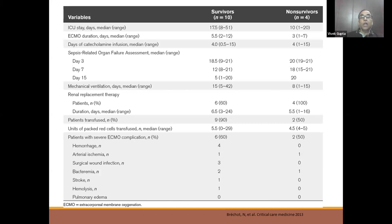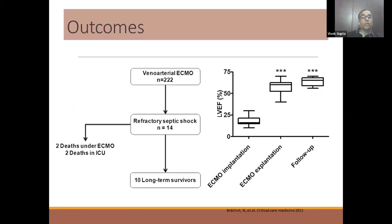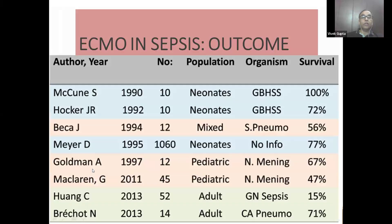Even looking at the renal profile, only 60% of survivors required renal replacement therapy compared to 100% of the non-survivor group, and adding another organ dysfunction increases mortality by almost 10%. In this group, 10 patients had long-term survival with four deaths in the ICU — two under ECMO and two after ECMO. If you look at the outcomes in sepsis, there is a vast difference; however, in the neonatal population it is very good compared to the adult population.